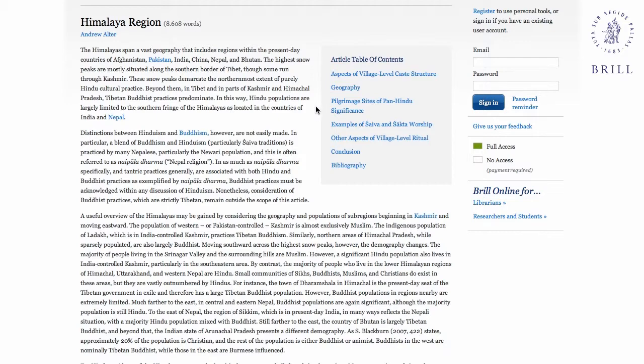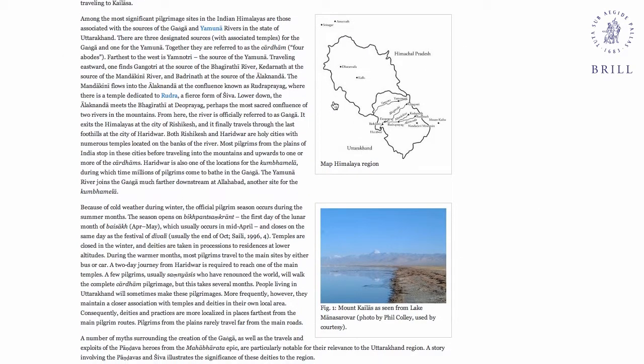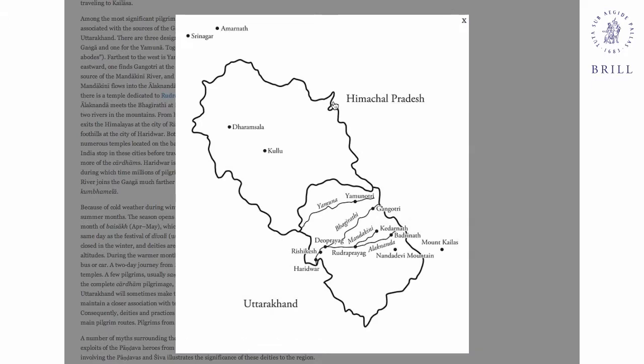Brill's Encyclopedia of Hinduism Online has a large amount of rich illustrations, maps, and photographs. This article on the Himalaya region, for example, provides a map of significant pilgrimage sites as well as a photograph of the landscape. These images are embedded in their respective articles, and you can click on them to easily view them in more detail.